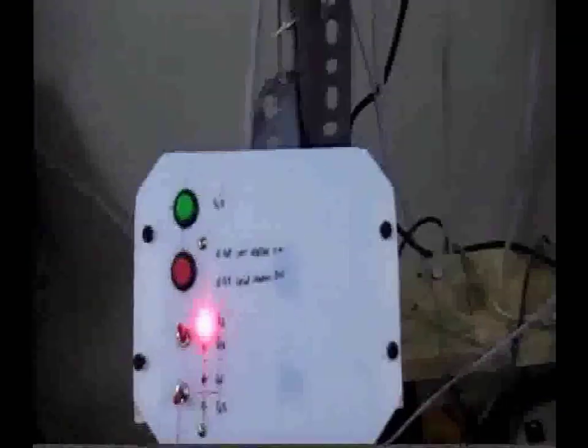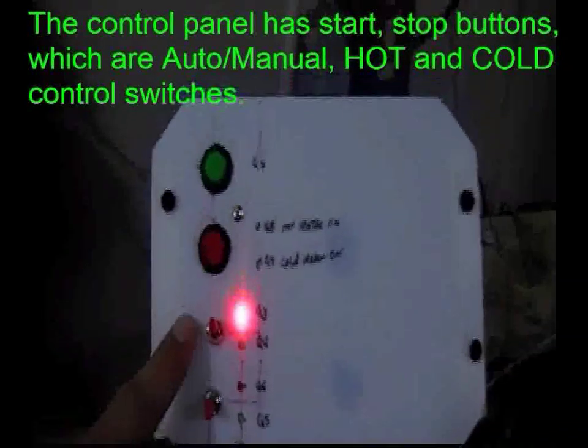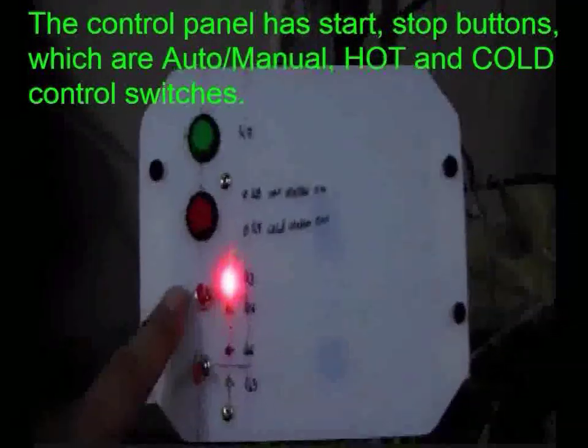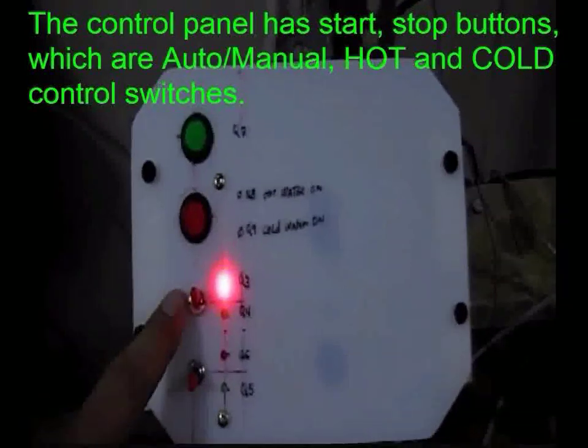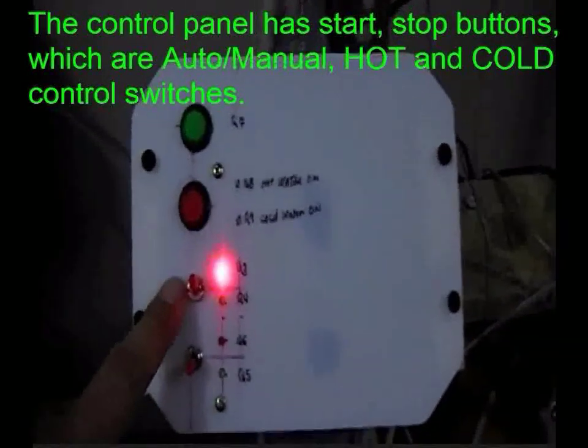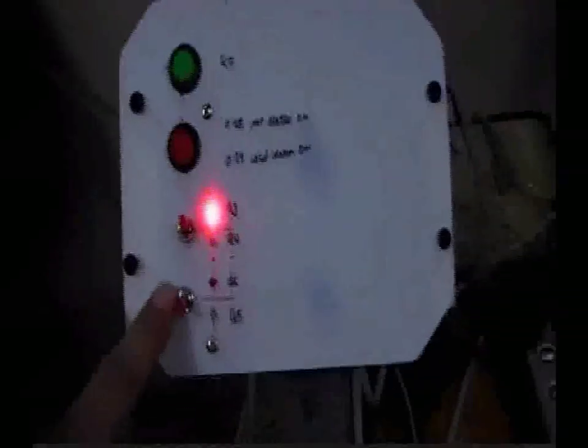As you see, this temperature controller has a panel by which we can start, stop the system, and also we can change the status to put it in auto or manual mode. When it is on manual mode, we can turn either hot water or cold water valve on and off.